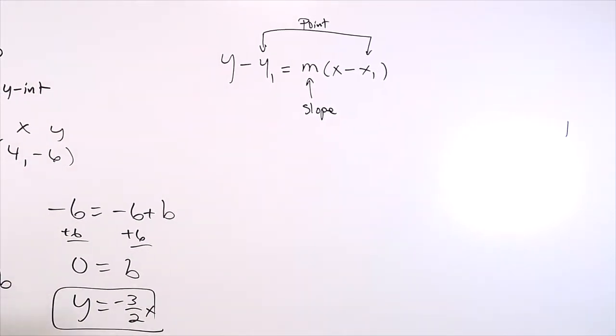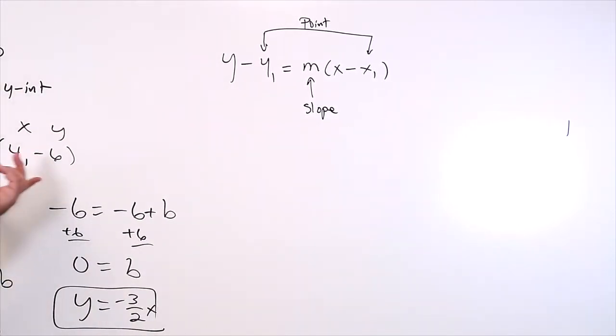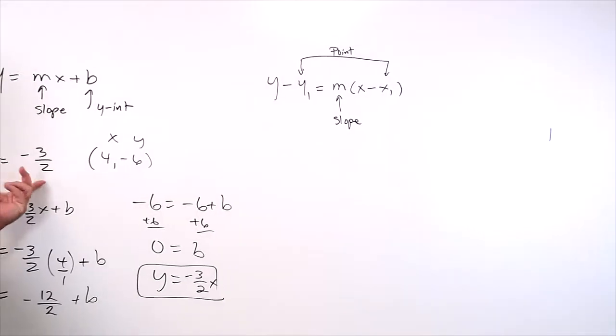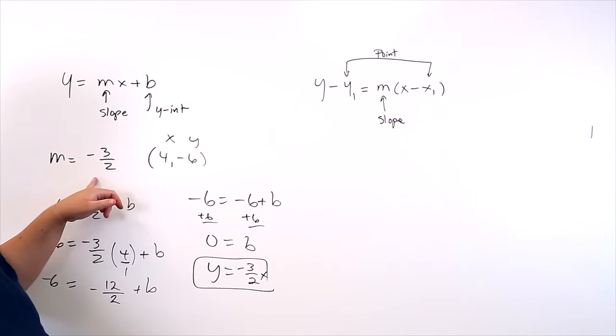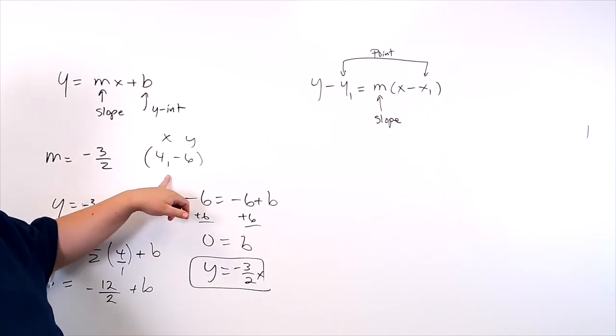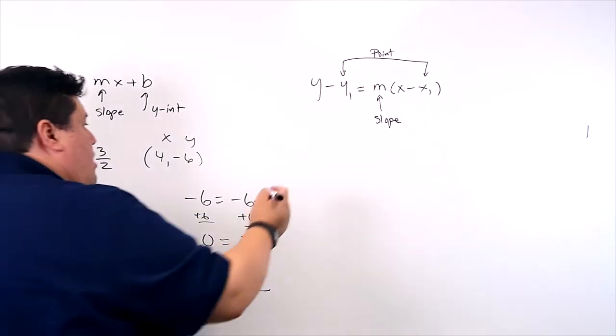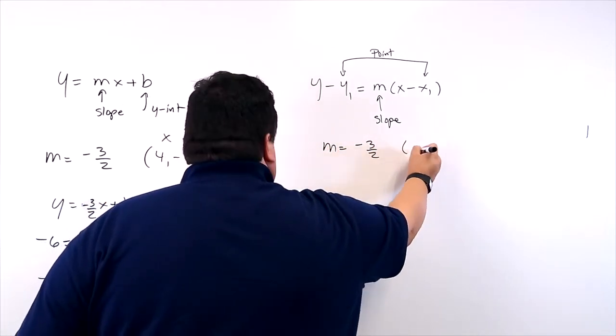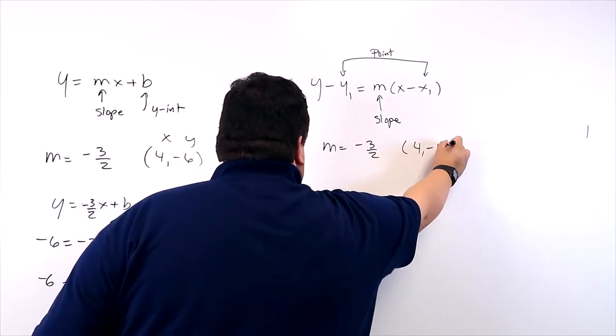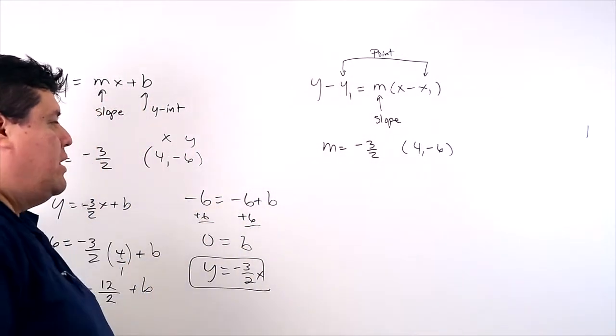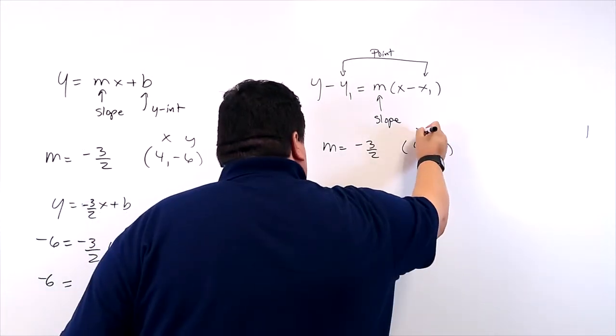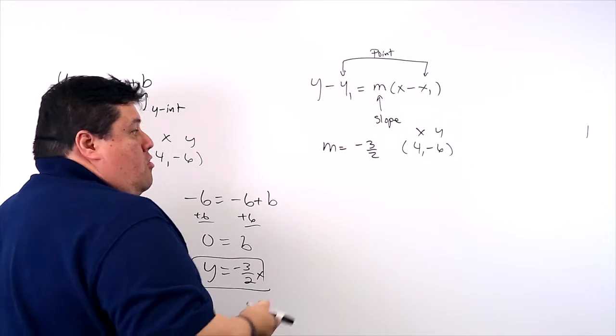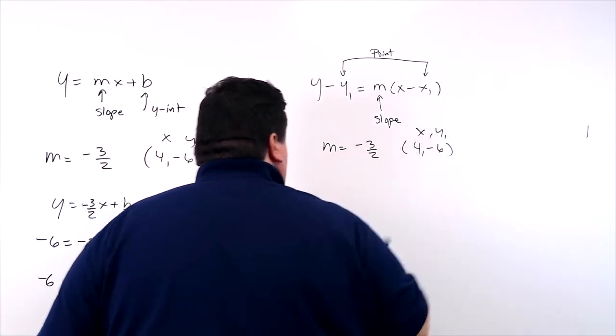And you already have all the information that you need. Remember, you have the slope of negative 3 over 2 and remember that you have a point. So let me write this down over here. We have a slope of negative 3 over 2 and then you have a point of 4, negative 6. And this is my ordered pair, x and y. This is my only point, so I could put a 1 on the bottom.